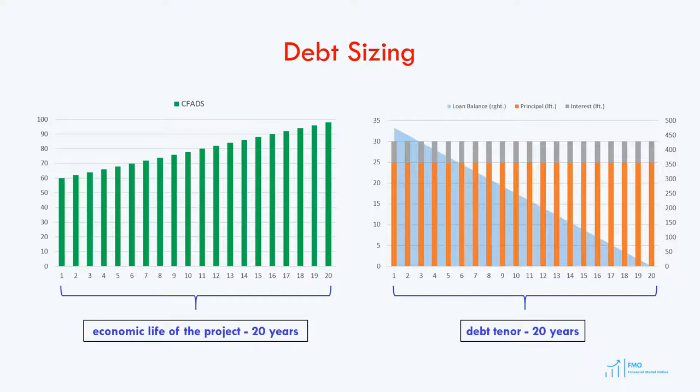The lenders may insist that the project company repays the loan in year 6. The sizing of the loan was based on 20 years of the project's cash flows; however, the actual repayment will be made in year 6. This is how we get a balloon repayment profile — how can a project company repay the total loan in year 6 if the debt was sized based on 20 years of cash flows?